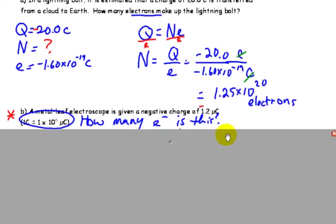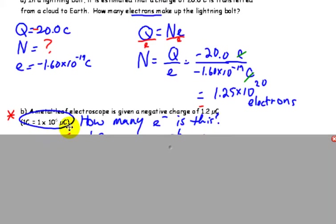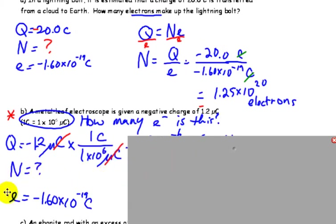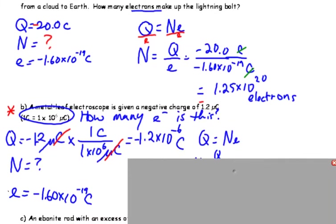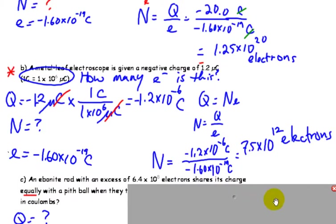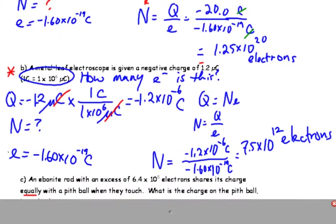B, a metal leaf electroscope is given a negative charge of 1.2 microcoulombs. And you can see here, 1 coulomb is equal to 1.6 times 10 to the 6 microcoulombs. How many electrons is this? So, of course, we're dealing with very small charges, so sometimes we'll see microcoulombs, millicoulombs. So you may want to just circle this so you have access to it and you know the relationship between coulombs and microcoulombs. So, how many electrons? Again, we're looking for big N. One elementary charge is negative 1.60 times 10 to the minus 19 because we're told it's electrons. And to convert microcoulombs to coulombs, 1 coulomb is 1 times 10 to the 6 microcoulombs, so that is negative 1.2 times 10 to the minus 6 coulombs. So, again, we're looking for big N. Rearranging the equation there, I get 7.5 times 10 to the 12 electrons.